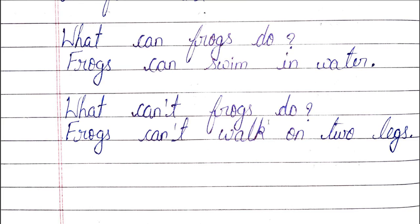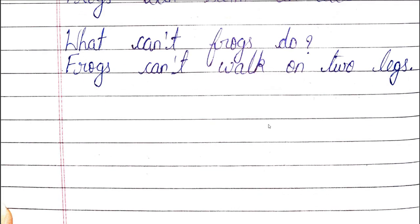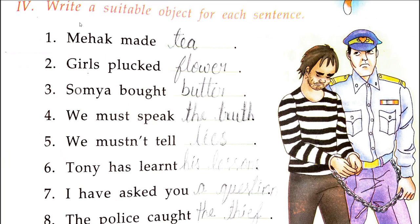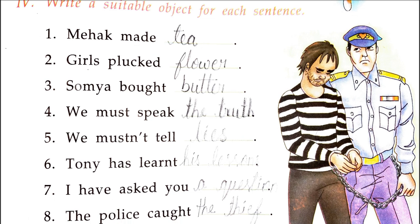Look at this exercise. Write a suitable object for each sentence. Here you have some sentences and you have to fill in a suitable object. For example: I have made tea. Girls plucked flowers. Sawmya bought butter. We must speak the truth.